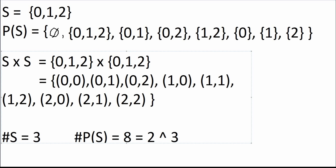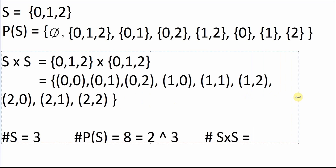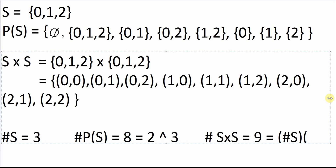The cardinality of the Cartesian product S times S — if you count them, you'll see nine elements. Another way to look at it: the cardinality of S times the cardinality of S, which is three times three, gives you nine. If it were A times B, you'd multiply the cardinality of A by the cardinality of B in the same way.